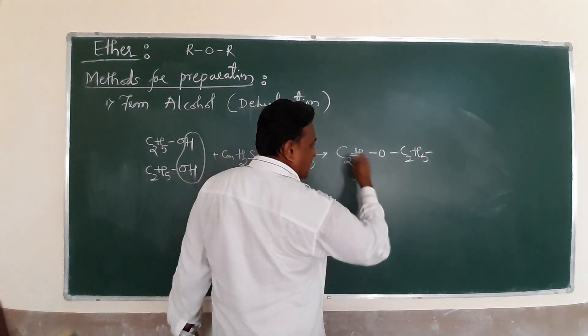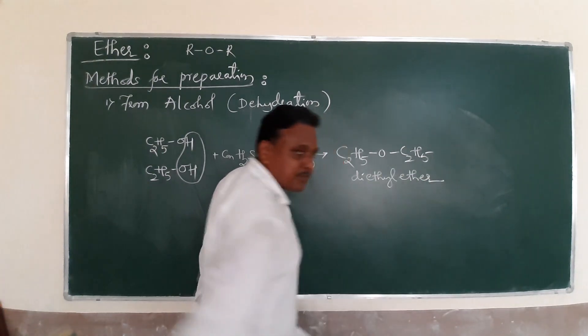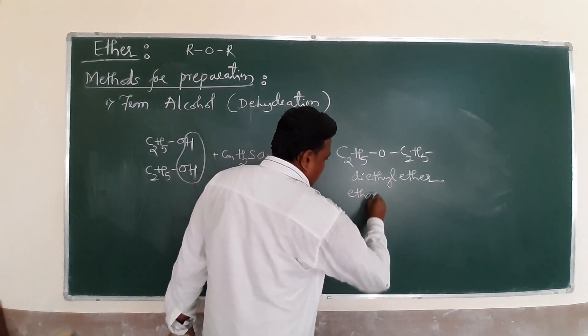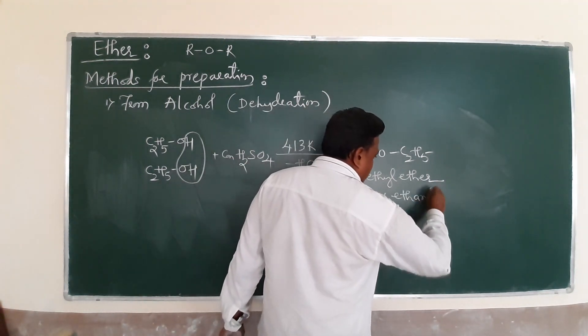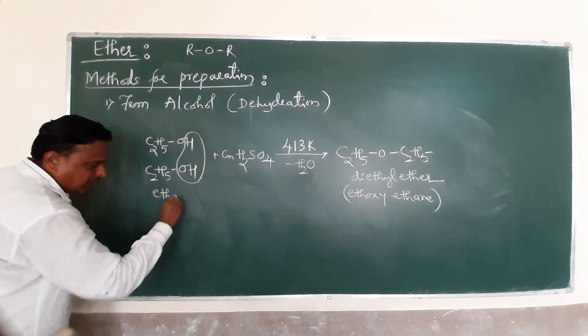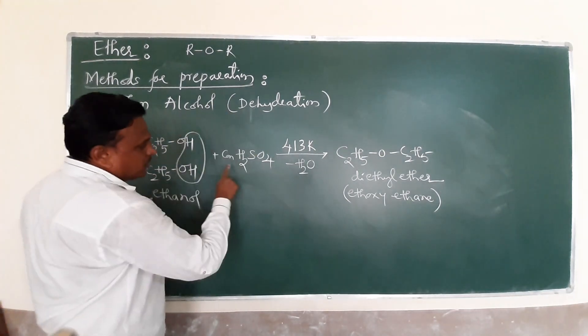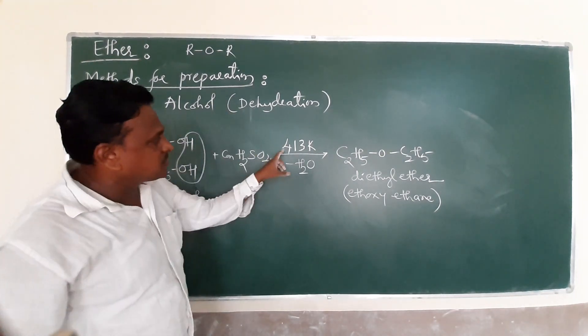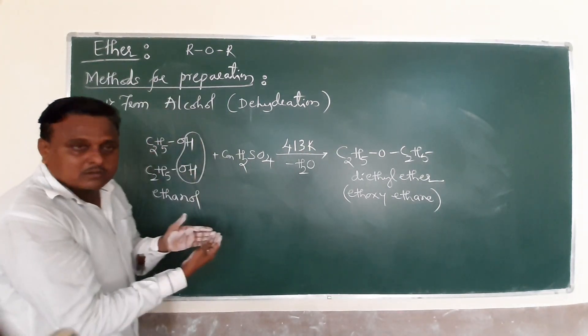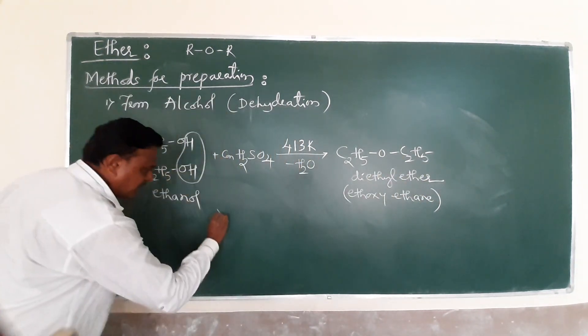To remove the water, what remains? C2H5-O-C2H5. We know this compound - diethyl ether. This is ethyl alcohol reacting with concentrated sulfuric acid at 413 Kelvin with the removal of water to form diethyl ether.